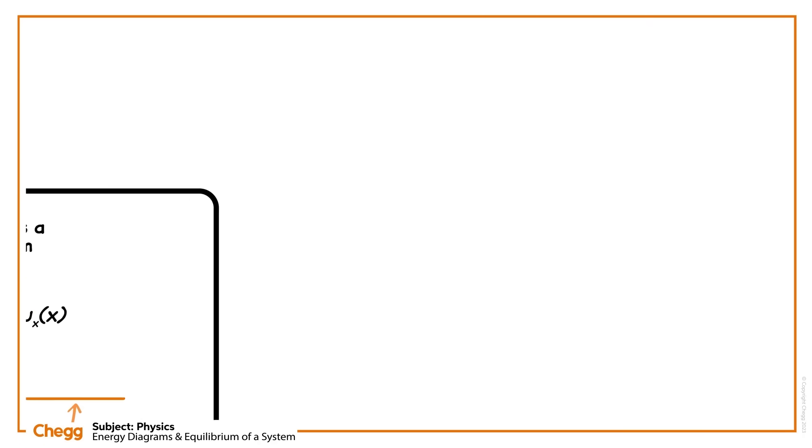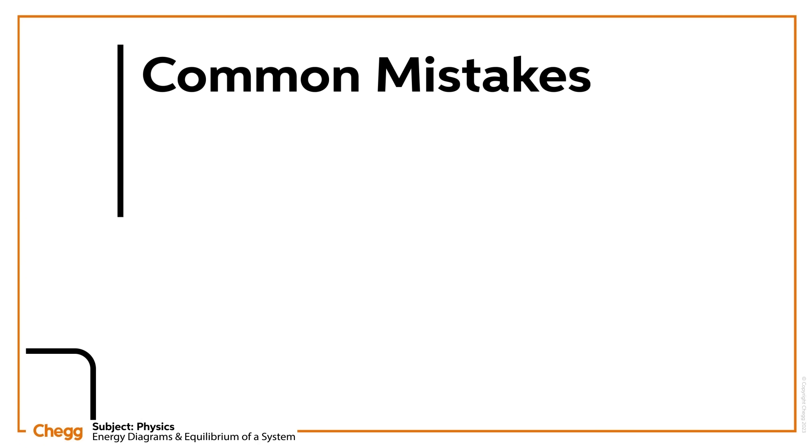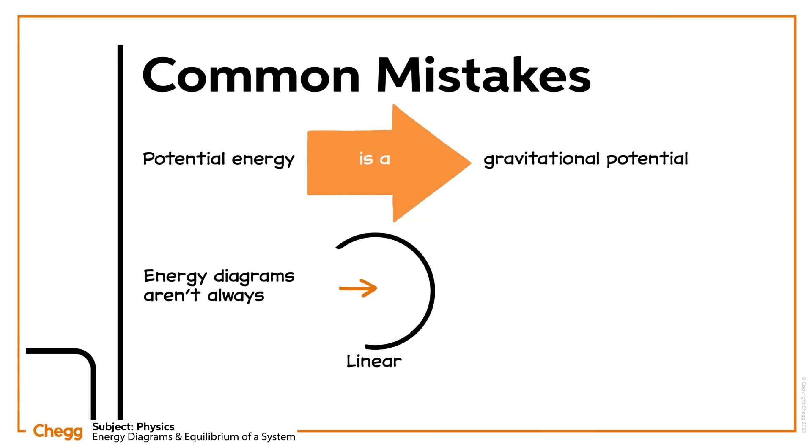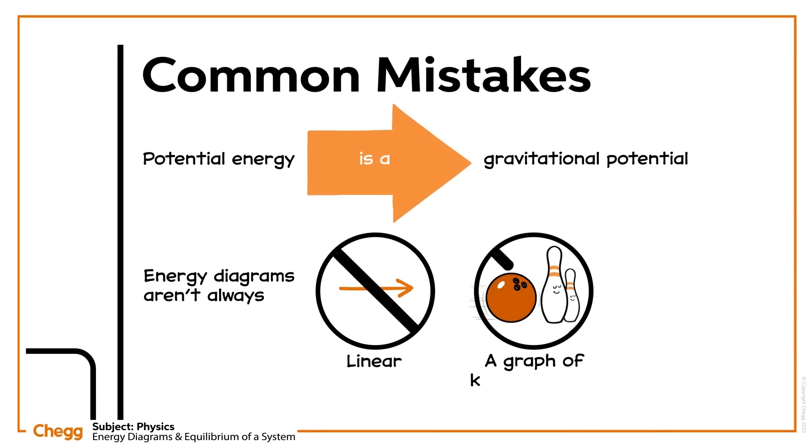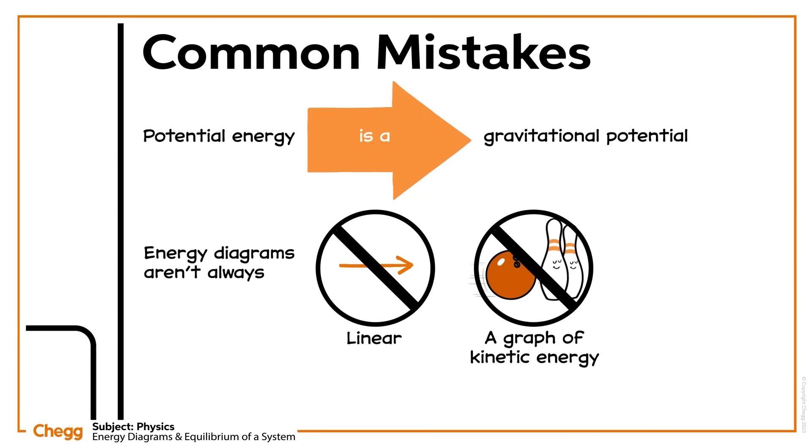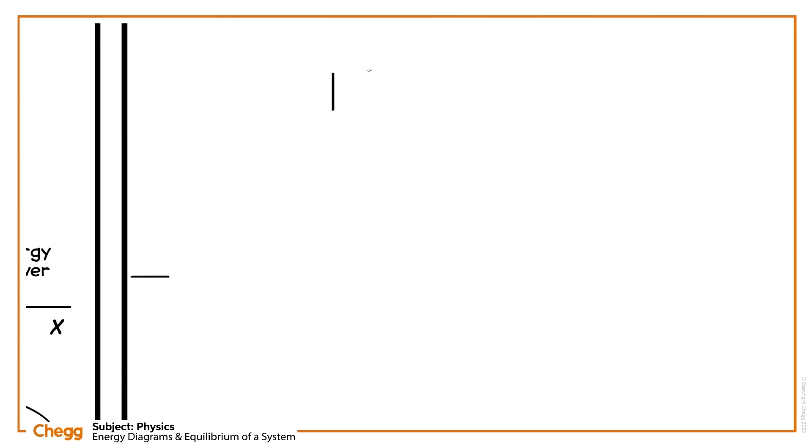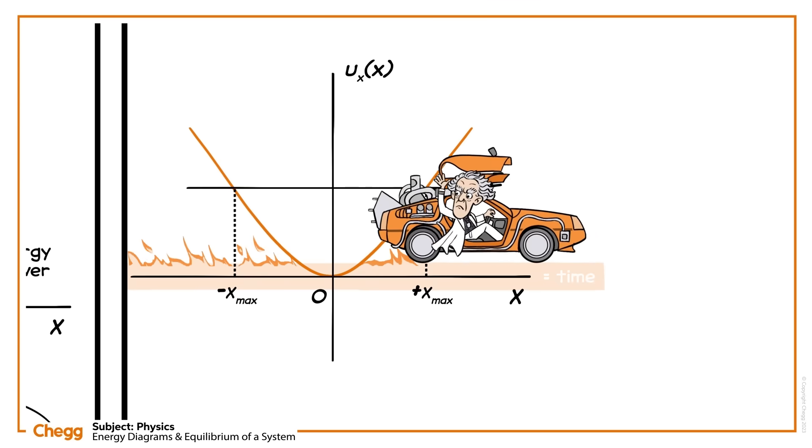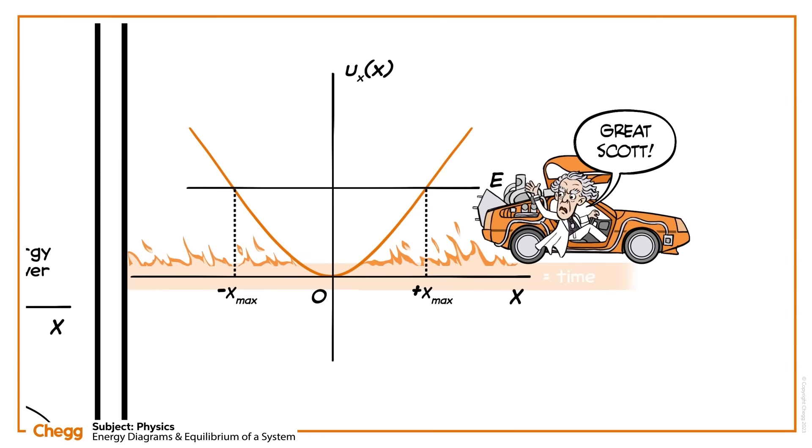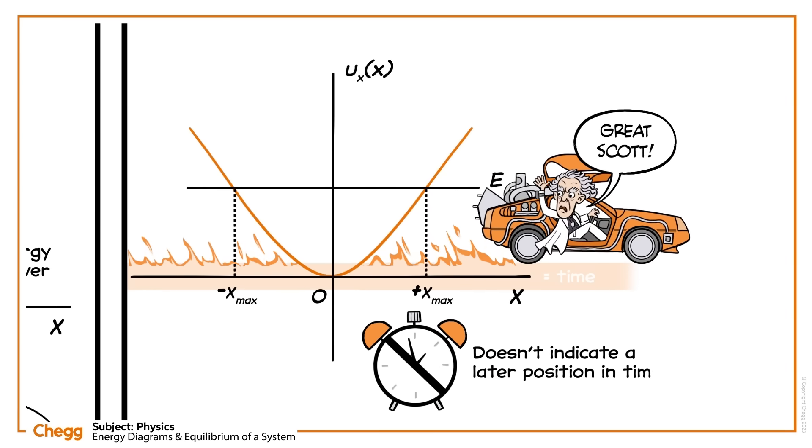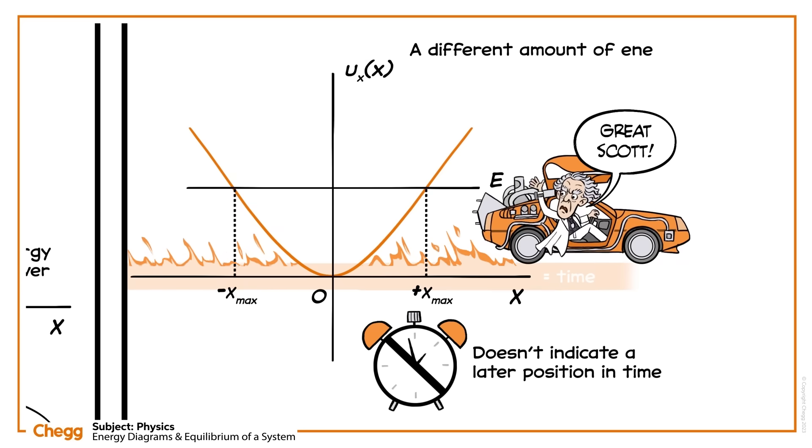It's important to note here that we've been looking at energy diagrams where the potential energy is a gravitational potential. This isn't always the case, and therefore energy diagrams aren't always linear, nor always a graph of kinetic energy. As such, don't forget that these aren't usual graphs where the x-axis is equal to time, so a point further to the right doesn't indicate a later position in time but simply a different amount of energy relative to the position within the system.